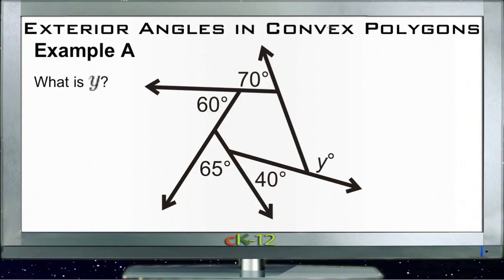For exterior angles in convex polygons, our Example A question asks us what the angle y is here in this oddly shaped five-sided figure. All we need to do to figure that out is to remember that for any convex polygon, the sum of all the exterior angles is always 360 degrees.